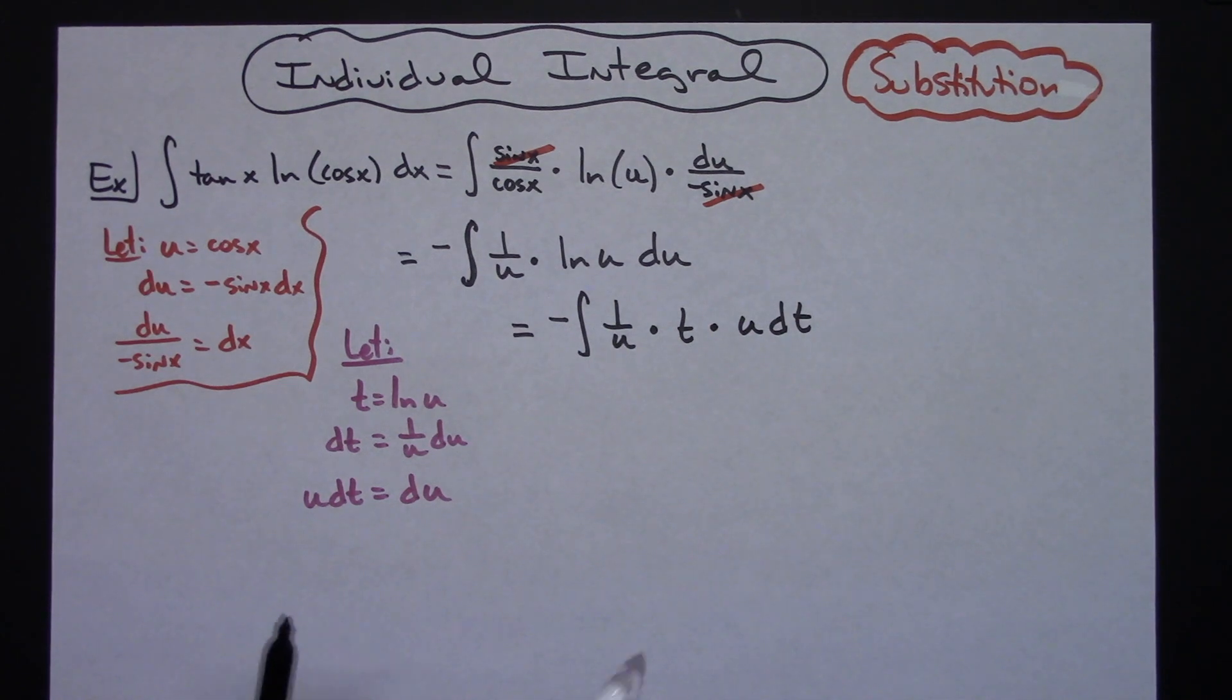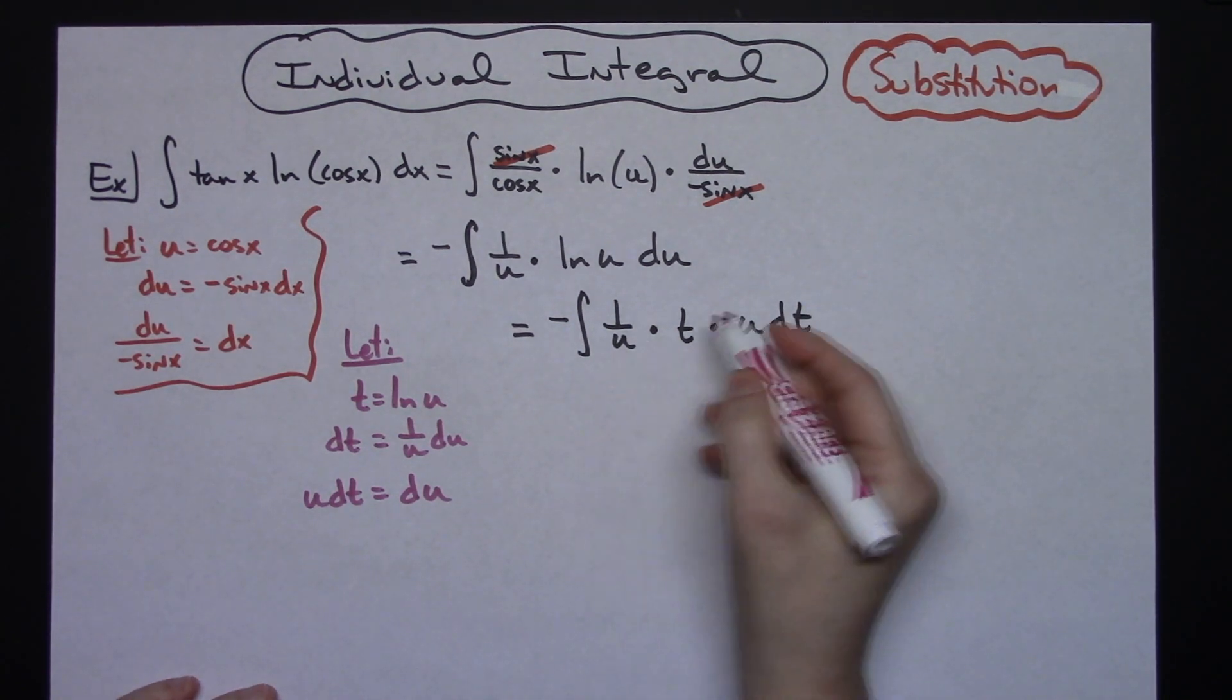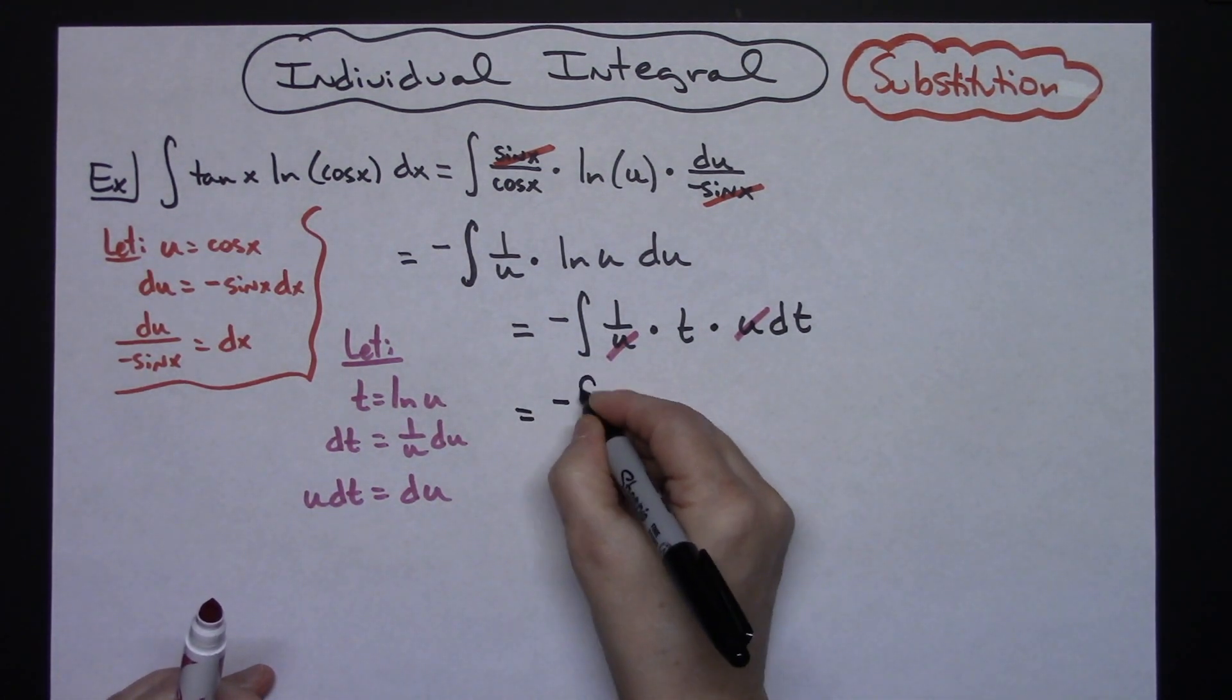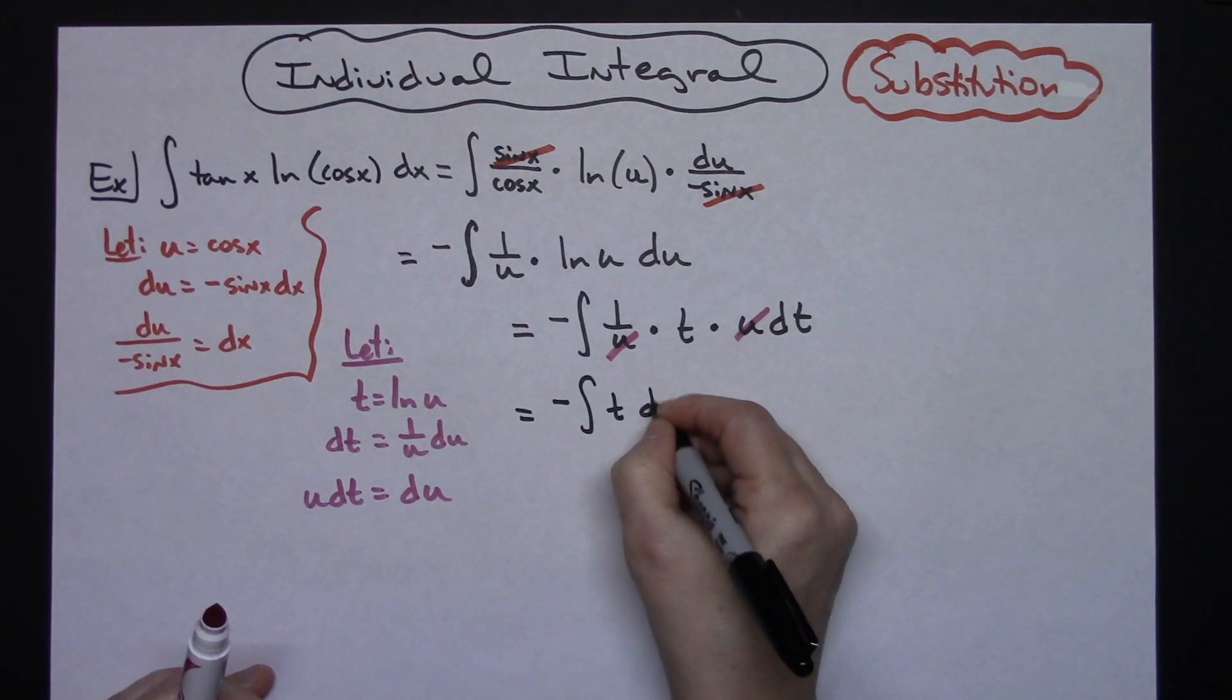Okay, now what that's going to allow me to do is to take this u and this u and cross them out. Alright, 1 times t is just going to be a nice little t in there. So I'm going to have negative integral of t dt.